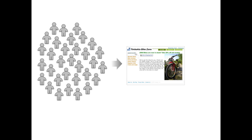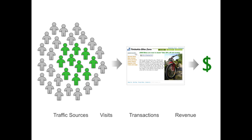Say you have an e-commerce website, and many visitors visit your website and purchase products. Using Google Analytics, you can measure for each source of traffic the number of visits, the number of transactions, and the total revenue. Say you want to define a segment of these visits — for example, visits that had greater than zero dollars in revenue. Let's look at a query to request that from the API.